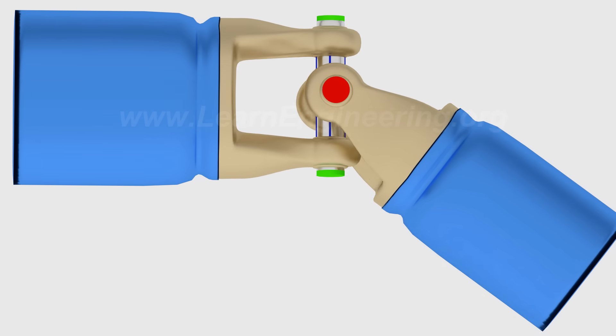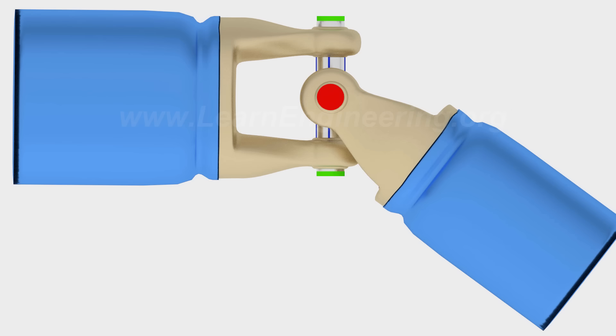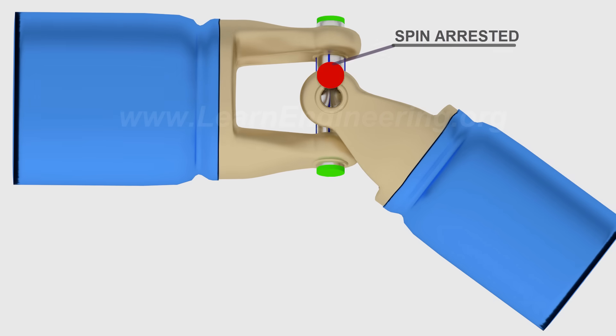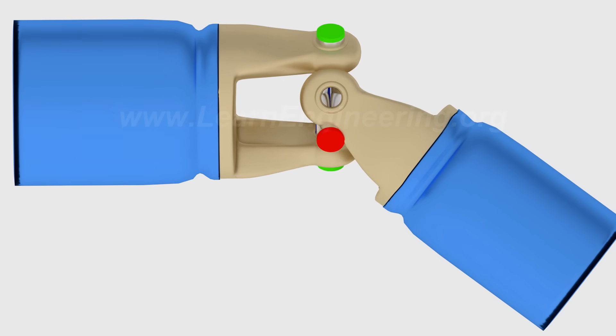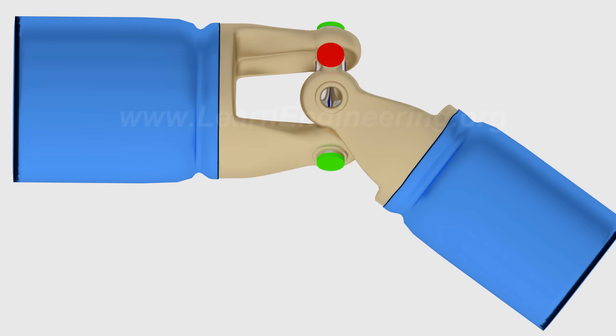To make the cross spin concept clearer, let's have a look at this hypothetical animation where the spin of the green axis is halted. It is clear that, without this spin, the motion of the inclined hook joint is impossible.